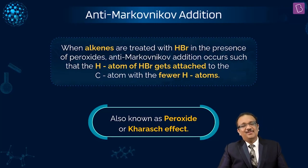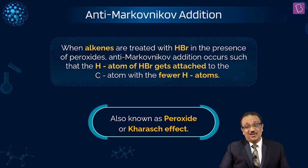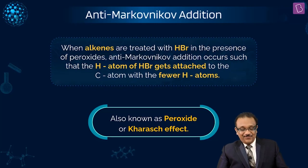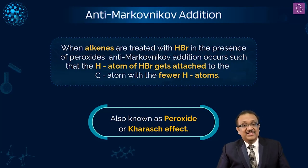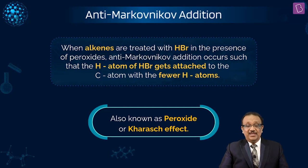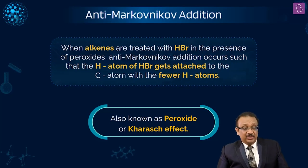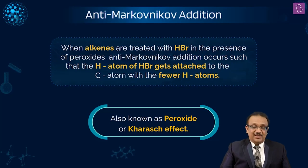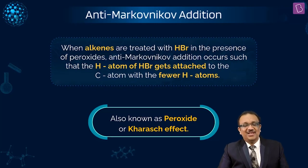This phenomenon of Anti-Markovnikov Addition is sometimes called the Kharasch Effect, and sometimes called the Peroxide Effect. It could have been called Kharasch Addition, but nobody called it that. It's history — whatever it is.